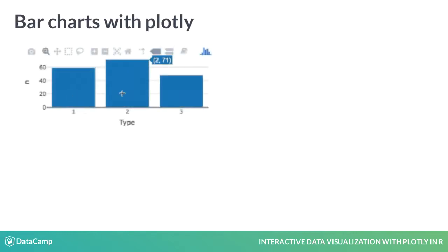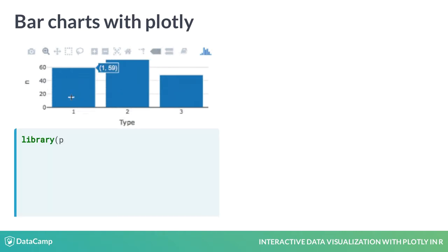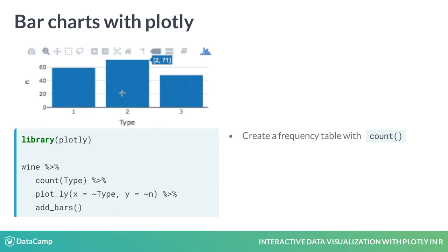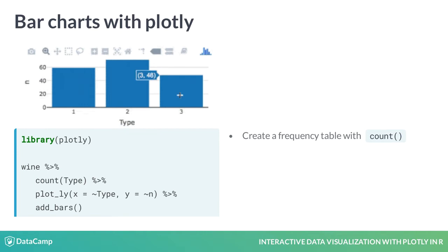To explore the distribution of wine type, a categorical variable, we use a bar chart displaying the number of wines of each type. There are three fundamental parts to a Plotly graphic. First, we have the dataset — here we calculate a frequency table giving the number of wines of each type using the COUNT command. We then pass this summarized dataset to the plot_ly command, which creates our base layer, similar to the ggplot function.